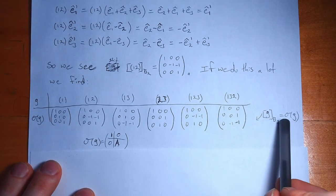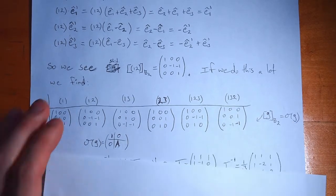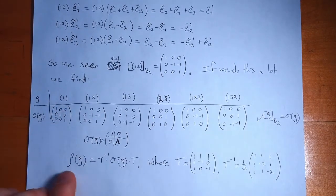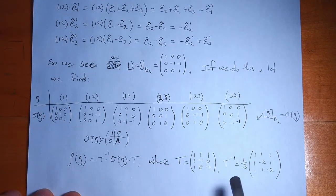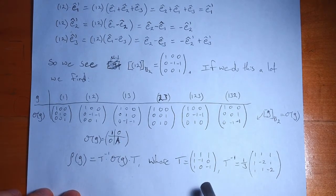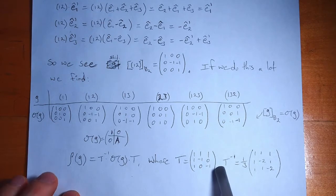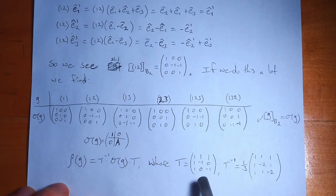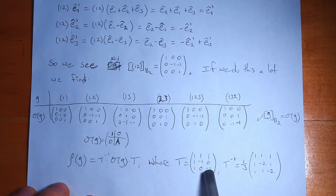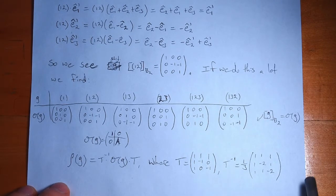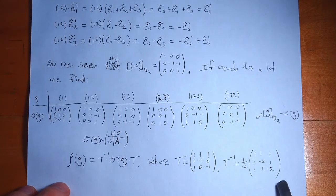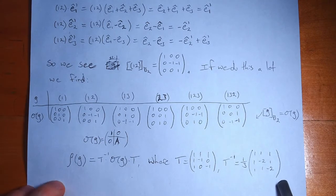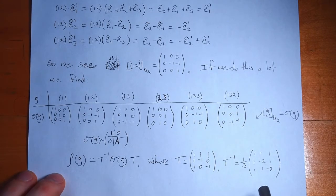All of these group elements have the form: a 1 in the top-left, a row of zeros, and then a 2×2 matrix that does all the work. The representations ρ and σ are equivalent — σ being the representation in the second basis — and so the equation T⁻¹ρ(g)T = σ(g) holds. We can construct the matrix T by writing the new basis vectors as columns: (1,1,1) for e_1', (1,−1,0) for e_2', and (1,0,−1) for e_3'. I found T⁻¹ using an online calculator.